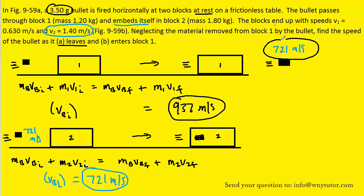Well, looking at the picture, that would be the 721 meters per second. Part B wants the speed of the bullet as it's entering block 1, so that would be right here.